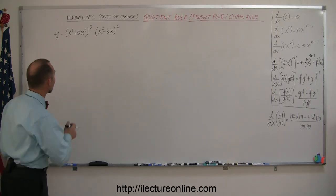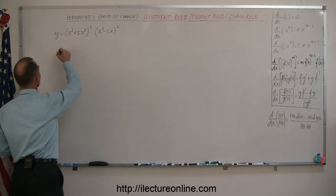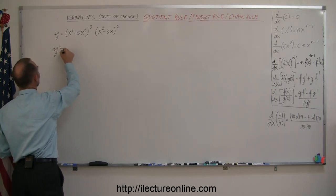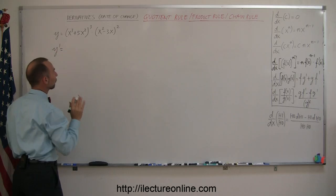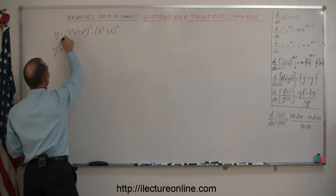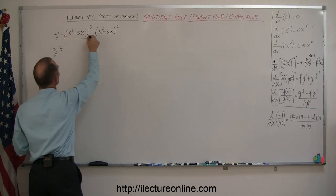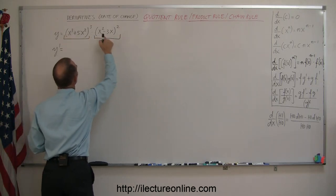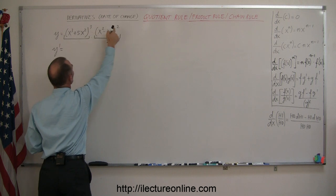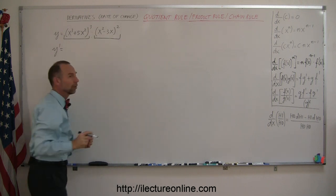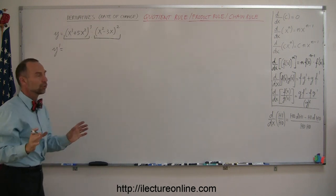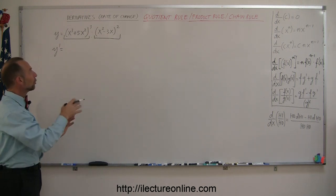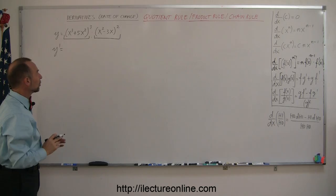So let's try to figure out how to find the derivative. First, you realize that it's really the product of two functions that are each raised to some exponent. So first you apply the product rule, and then you also apply the chain rule.